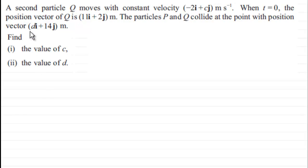Now in this last part of the question, we're told that a second particle Q moves with a constant velocity of minus 2i plus cj meters per second. When t equals 0, the position vector of Q is 11i plus 2j meters. The particles P and Q collide at the point with position vector di plus 14j meters. What we've got to do is find the value of c and the value of d.